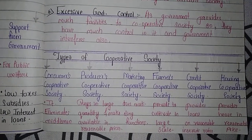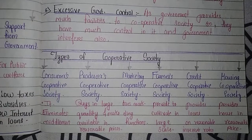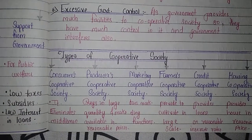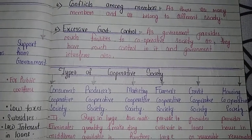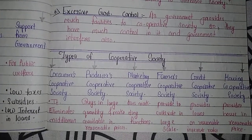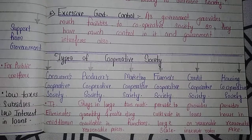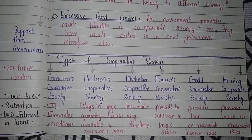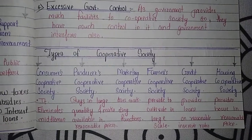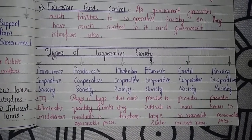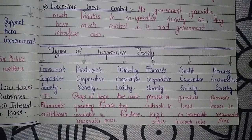The fourth type is farmers cooperative society. Farmers who each have some land form a cooperative society together. They pool their land and cultivate on a large scale, benefiting from economies of scale.